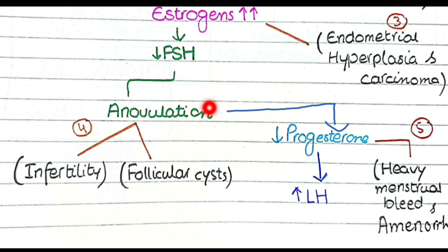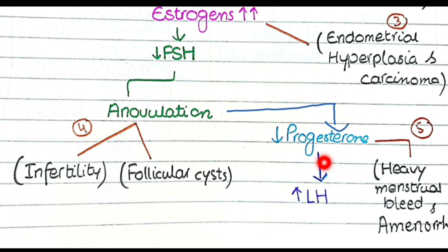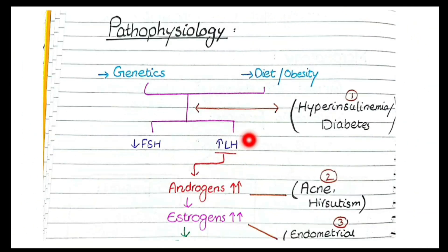Another important consequence of anovulation is lack of progesterone. Normally, after ovulation, the remaining part of the follicle is converted into the corpus luteum, which secretes progesterone. But because ovulation is not happening, the corpus luteum is not formed and progesterone is lacking. This lack of progesterone causes an increase in LH from the pituitary — because when progesterone is low, it cannot inhibit LH — and increased LH was the very beginning of this problem.